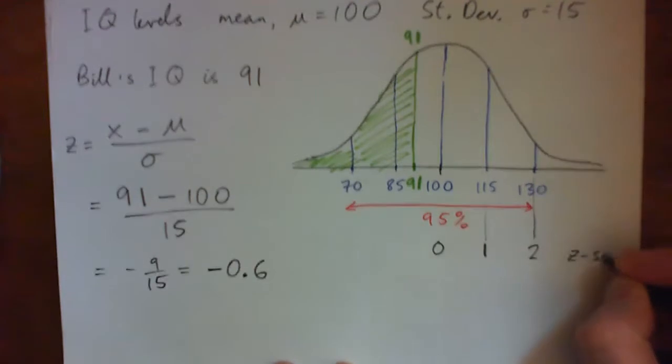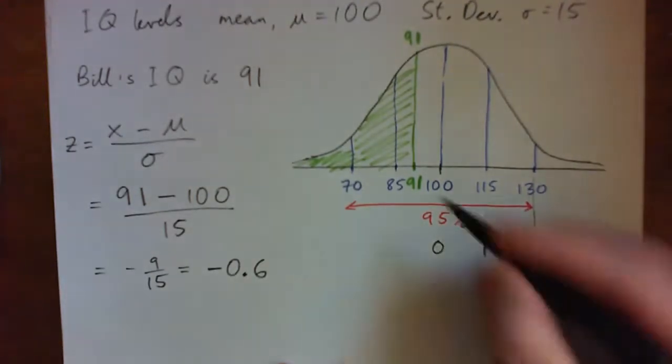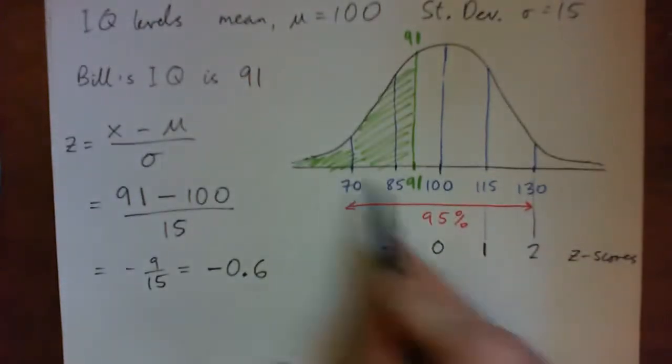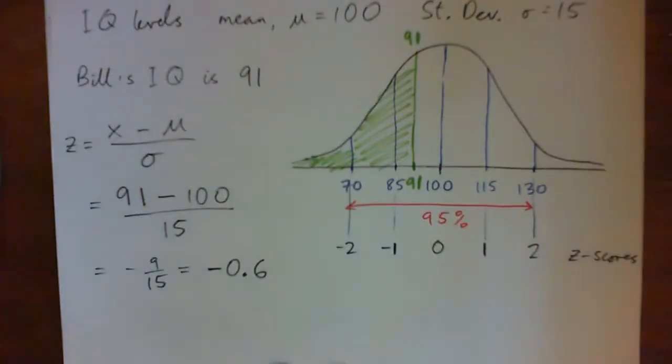Okay, so Z scores are just how many standard deviations above or below the mean we're at. Like 85 is negative 1 because it's one standard deviation below. 70 is negative 2 because it's two standard deviations below. Does that make sense? Yeah, it does.